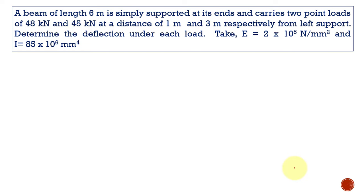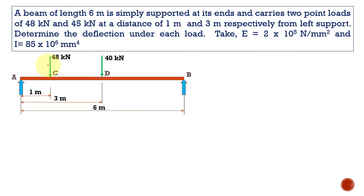Now let us solve the problem. A beam of length 6 meters is simply supported at its ends and carries two point loads of 48 kN and 45 kN at a distance of 1 meter and 3 meters respectively from the left support. Determine the deflection under each load. Consider Young's modulus as 2×10⁵ N/mm² and the moment of inertia as 85×10⁶ mm⁴. First, let us construct the given system. We have two point loads 48 kN and 40 kN located at distances of 1 meter and 3 meters from the left support. The entire beam length is 6 meters.